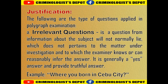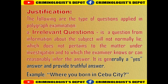Justification. The following are the types of questions applied in polygraph examination. A. Irrelevant questions — a question from information about the subject that the subject will not normally lie about, which does not pertain to the matter under investigation and to which the examiner knows or can reasonably infer the answer. It generally yields a yes answer and a truthful response.